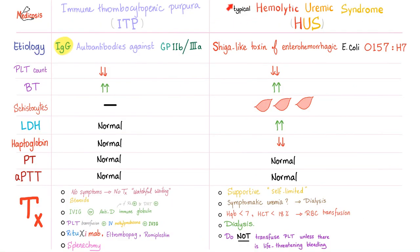We are talking about typical hemolytic uremic syndrome, which happens in children and which happens with diarrhea. Comparing immune thrombocytopenia versus HUS by etiology: ITP involves IgG antibodies against GP2B3A on the platelet. HUS involves the Shiga-like toxin of EHEC O157:H7 — a Shiga toxin-producing E. coli, also known as STEC — which makes platelets stick to the injured endothelium.